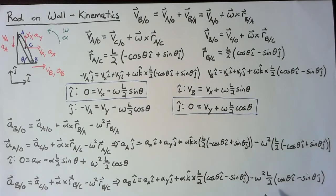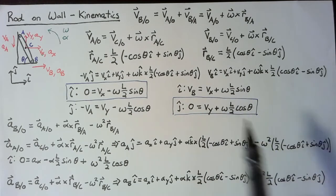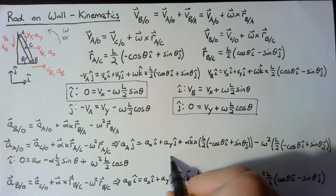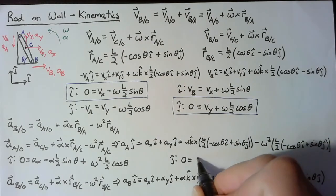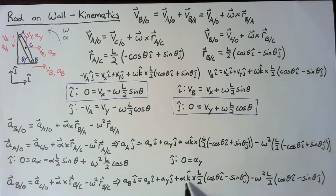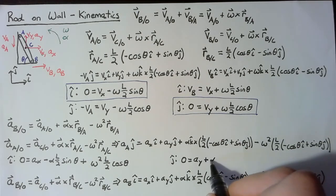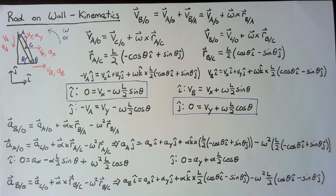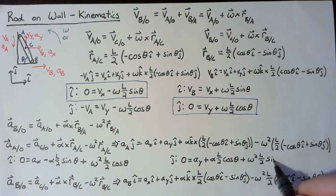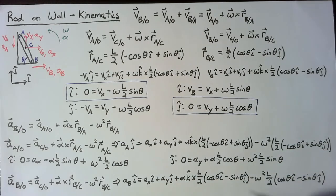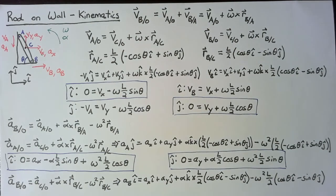For the B equation, all we really want is the j component. Taking the j of the second equation gives: zero equals the acceleration of y. Since k cross i gives positive j, we get plus alpha times L over 2 times cosine theta. And because the two negatives cancel, we also get plus omega squared times L over 2 times sine theta. These are the two equations we're going to use when we move to the kinetics — they relate the linear accelerations to the angular accelerations.